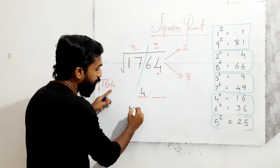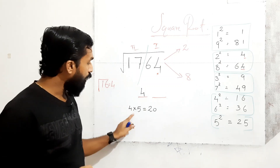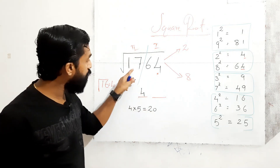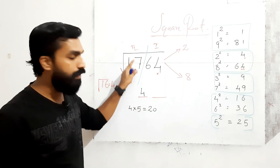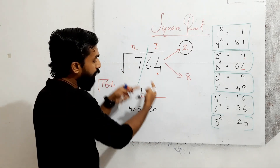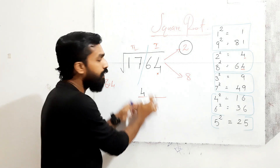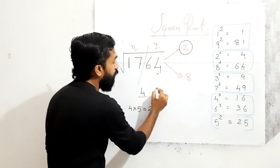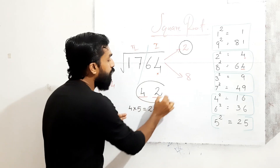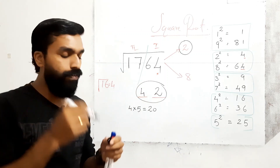Find 4 and its successor, which is 5. Multiply them: 4 × 5 = 20. The second group is 17 and the product is 20. Since 17 is less than 20, take the smaller number from the options, which is 2. So write 42. The square root of 1764 is 42.